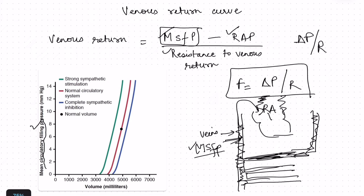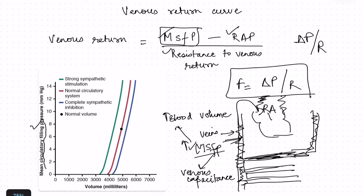Mean systemic filling pressure represents a single uniform pressure throughout the circulation when flow has stopped everywhere. The factors it depends on include blood volume — if pipes are filled with more water, pressure is higher, so increased blood volume increases mean systemic filling pressure. It also depends on venous capacitance. Veins are capacitance vessels supplied by the sympathetic system; increased sympathetic activity decreases venous capacitance, causing venous constriction.